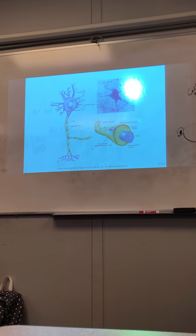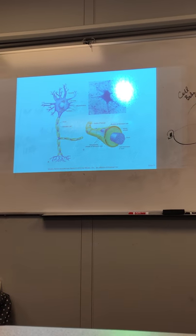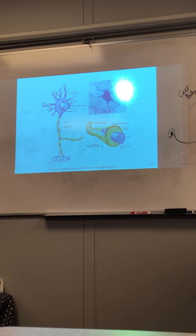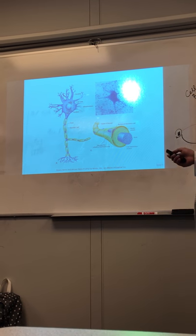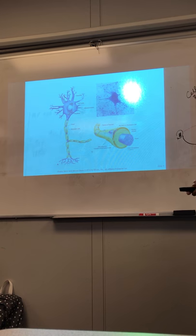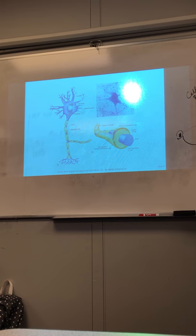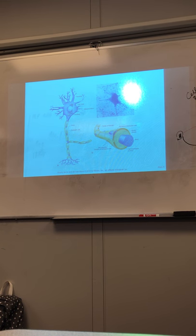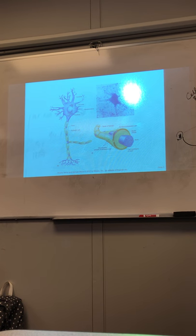Mitochondria is the powerhouse of the cell. It's an organelle and that's where internal respiration takes place, right? The aerobic glycolysis, which would yield 36 ATPs.